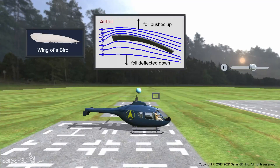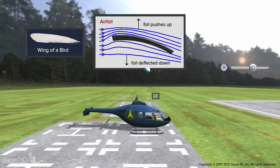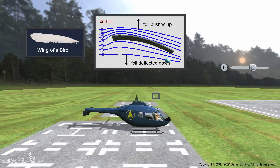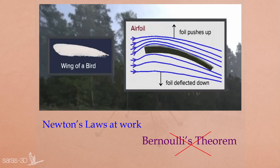When the blade cuts across an air stream, there will be airflow below and above the blade, which means a drag force is acting on the rotor blade. An airfoil generates lift by exerting a downward force on the air as it flows past. According to Newton's third law, the air must exert an equal and opposite — that is, upward — force on the airfoil, which is lift. The airflow changes direction as it passes the airfoil and follows a path that is curved downward. So, it is Newton's third law of motion which is at work.